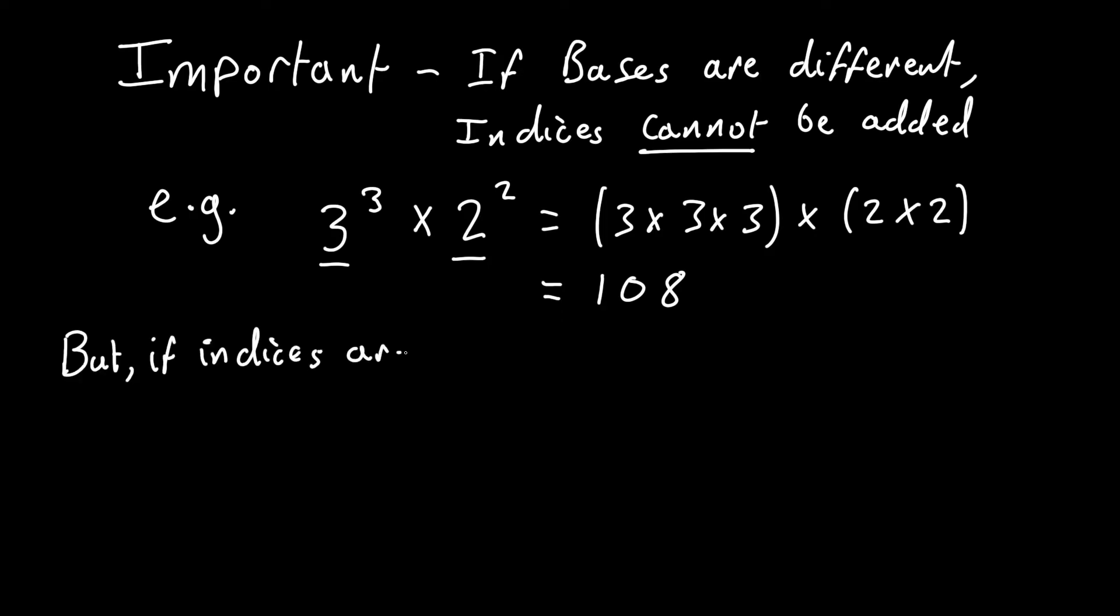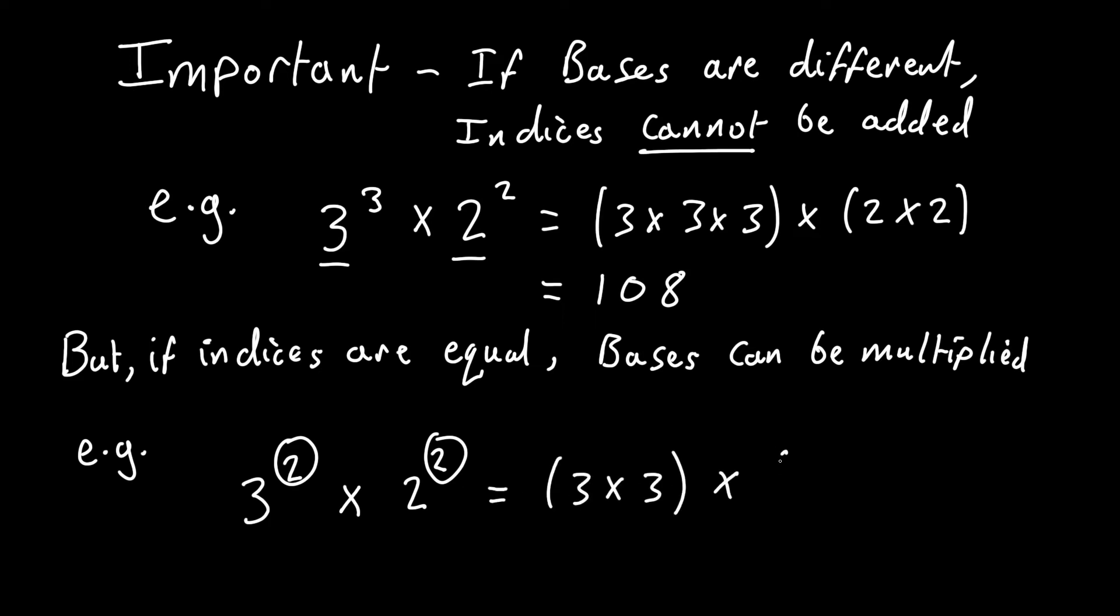But if the indices are equal, you can simplify the expression by multiplying the bases. For example, here the expression is the same as before, but the indices are now the same. If we expand out the powers and then separate the terms, you can see that this expression can be simplified by multiplying the bases, and keeping the index or the power the same.